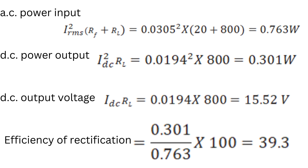AC power input = Irms² × (Rf + RL) = 0.0305² × (20 + 800) = 0.763 watts. DC power output = Idc² × RL = 0.301 watts. DC output voltage = Idc × RL = 15.52 volts. Rectification efficiency = output power / input power = 0.301 / 0.763 = 39.4%.